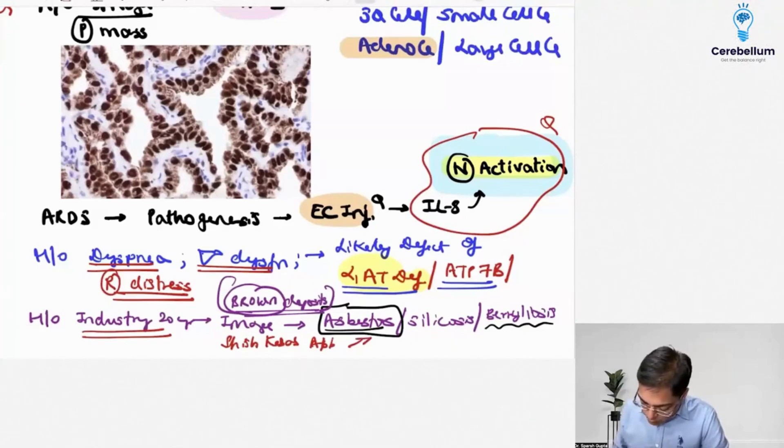So this patient had panacinar emphysema, was it mentioned? If you do, it was then of course panacinar emphysema can have one prominent cause that we have talked about, that is alpha-1 antitrypsin.